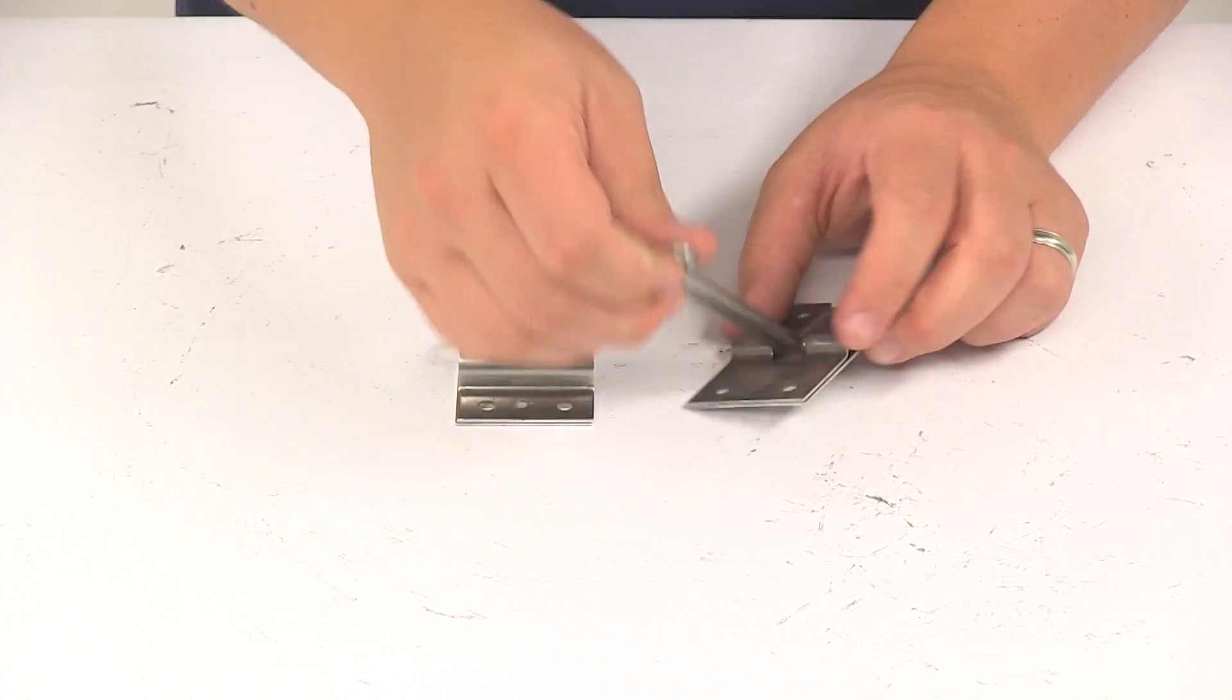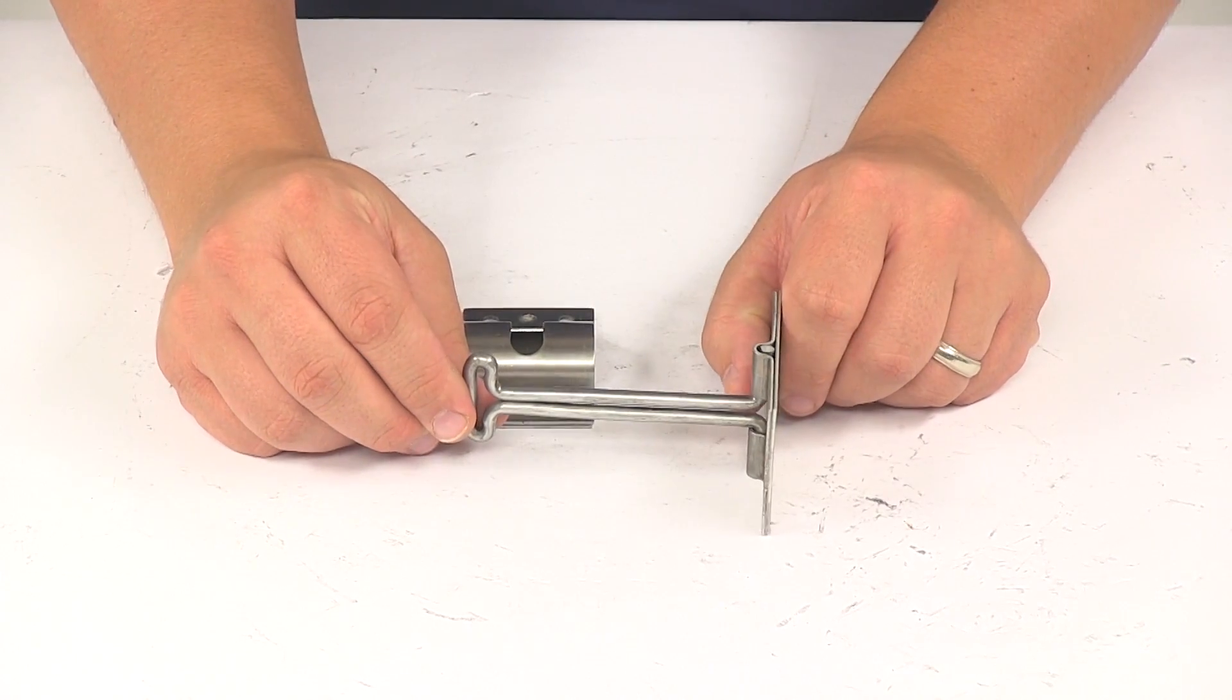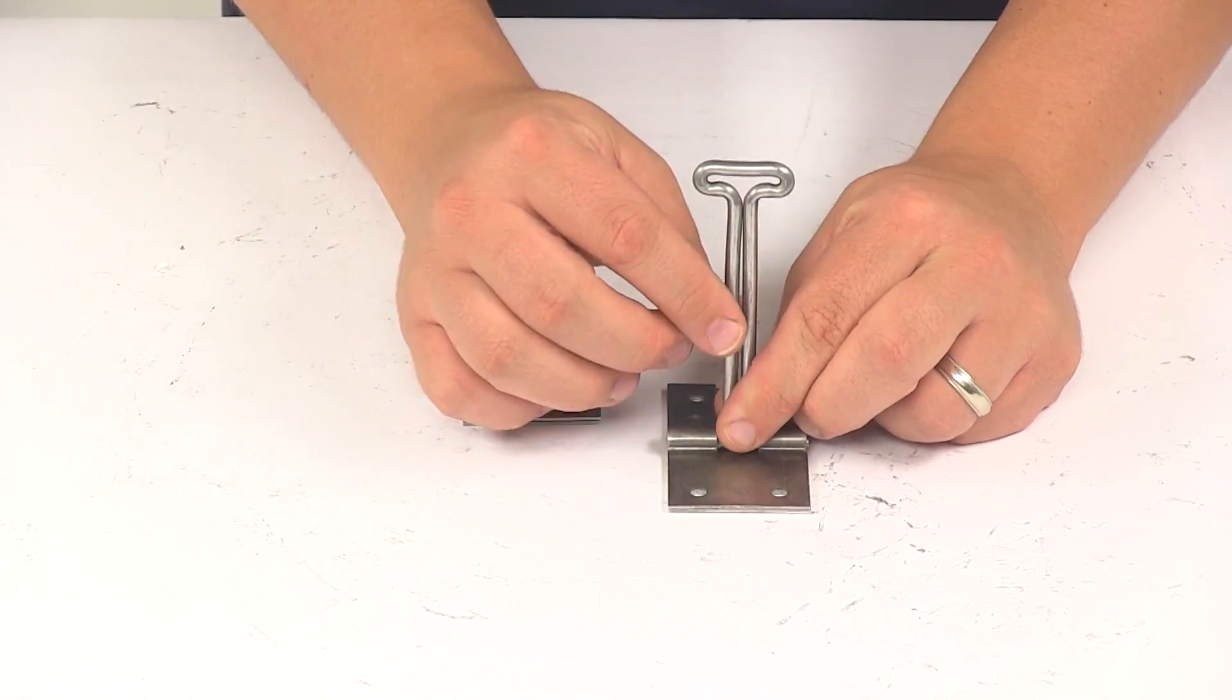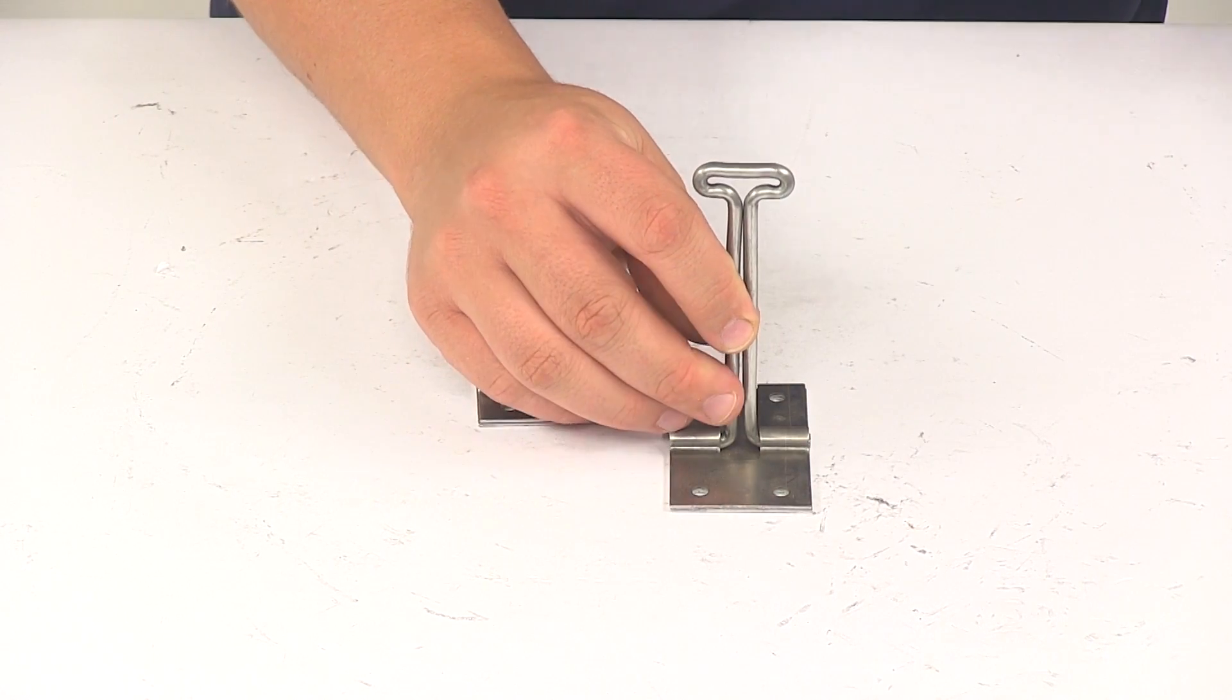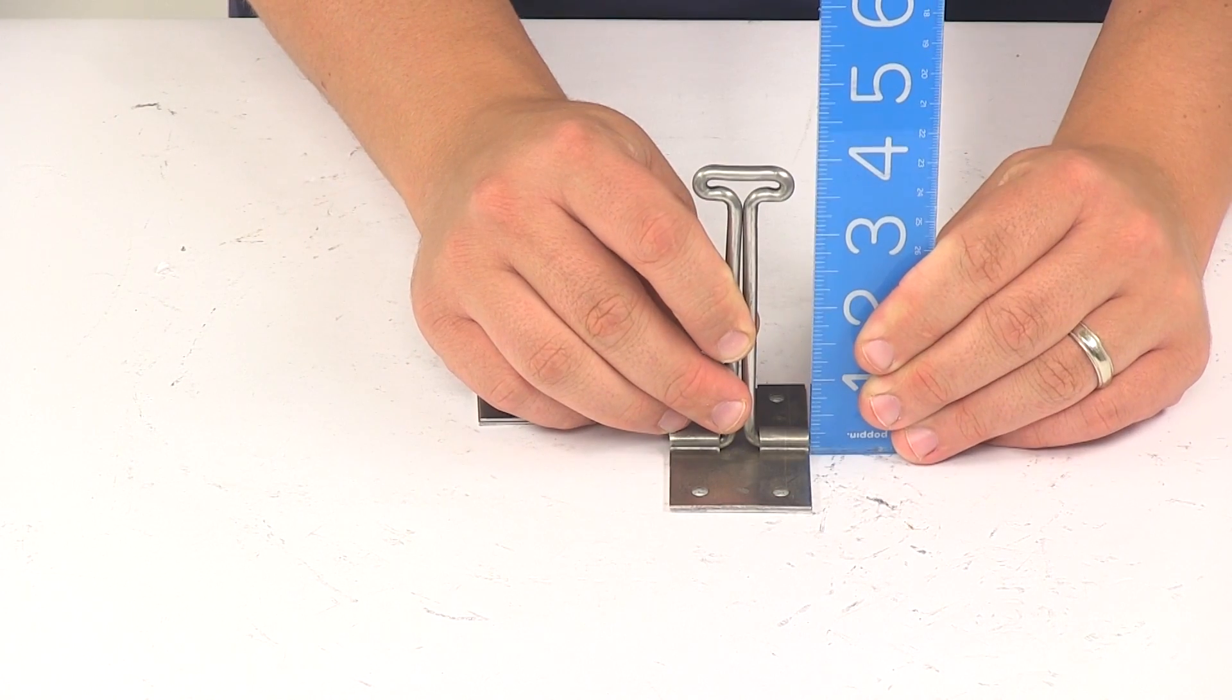The hook itself is going to measure about four inches long. So that's measuring from the back of the plate to the furthest out point of the hook. You can see they're pretty close to four inches.